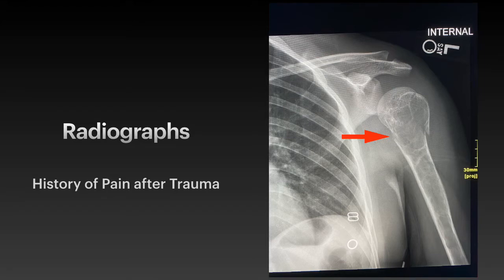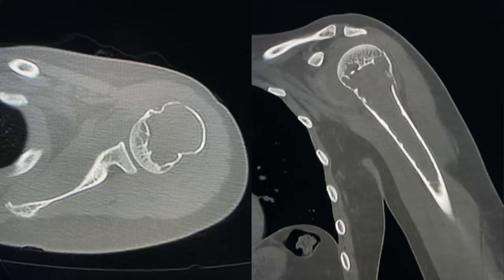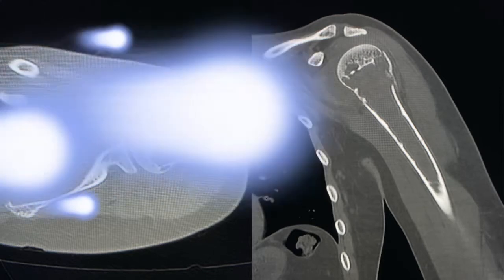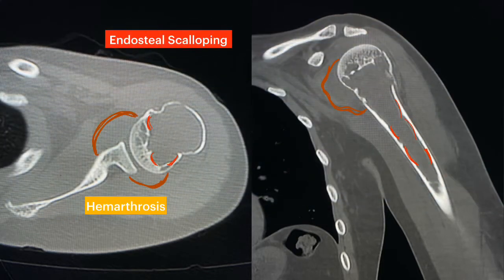Because of the underlying lesion, a CT was ordered. On the CT scan we can clearly see the cystic lesion within the proximal humerus. There is endosteal scalloping and thinning of the cortex.